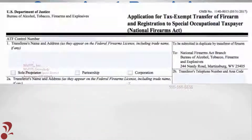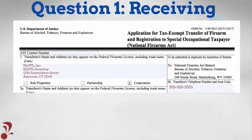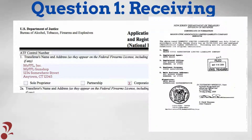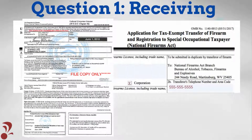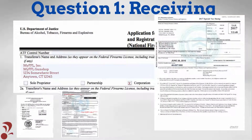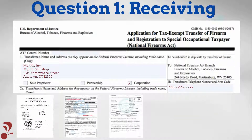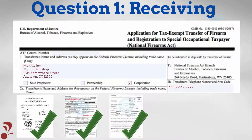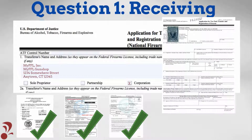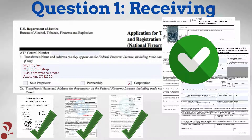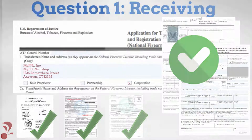When NFA firearms are received by your business, information in Question 1 should exactly match business entity documents, FFL, and SOT license as issued by ATF. Information appearing in Question 1 will be utilized for any subsequent Form 3 or Form 4's completed for these items.